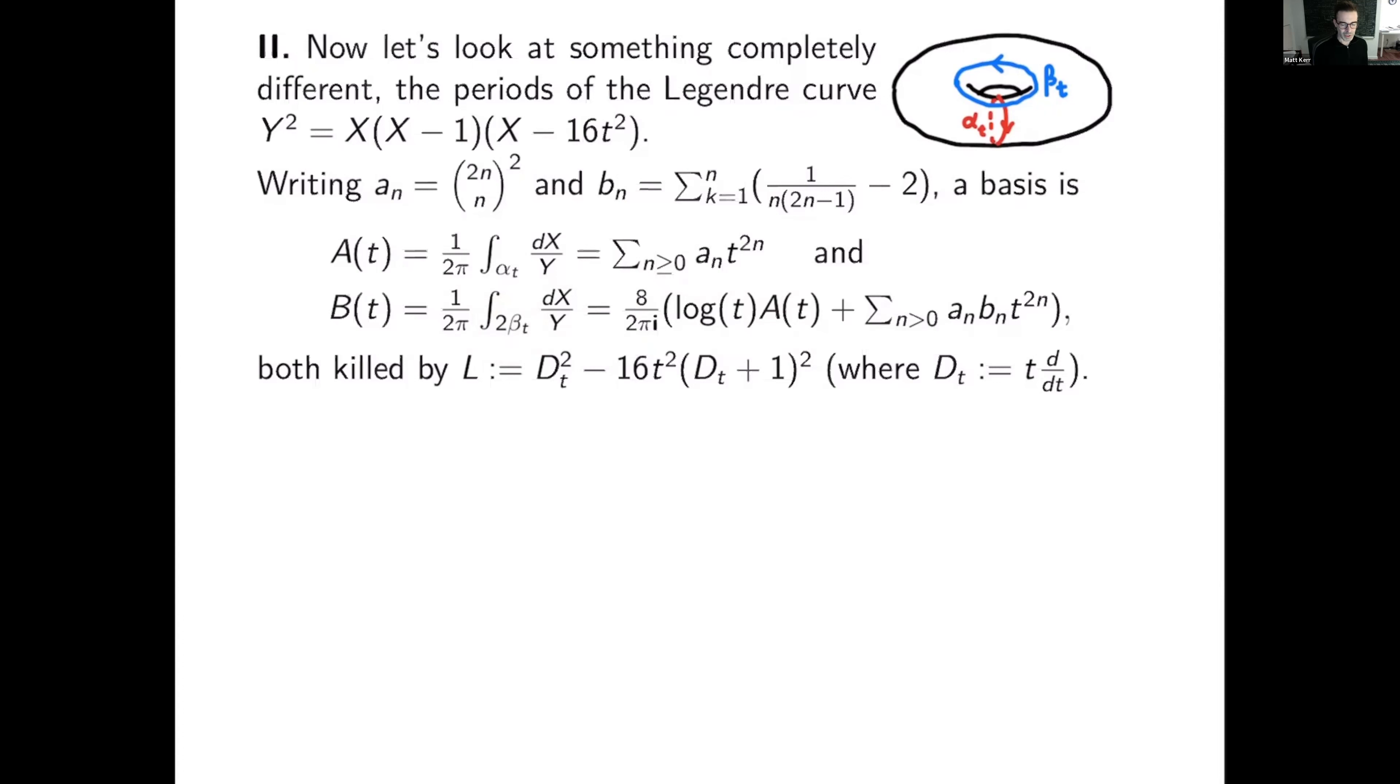And now by using the method of variation of parameters, I can cook up a function, b integral of a minus a integral of b, satisfying the inhomogeneous equation, Lc equals eight, equals a constant. So this is a first example of a unipotent extension of this differential system.